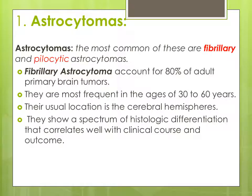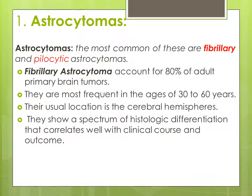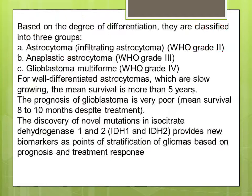Astrocytomas — the most common types are fibrillary and pilocytic astrocytomas. This nomenclature comes from their appearance under the microscope. The fibrillary type is related to the fibrillary background appearance of the tumor cells. Fibrillary astrocytomas account for about 80% of adult primary tumors, more common in adults, most frequent in the age range of 30 to 60 years. Their usual location is the cerebral hemisphere. They show a spectrum of histological differentiations correlated with clinical course and outcomes. Based on degree of differentiation, astrocytomas have been graded into WHO grades.